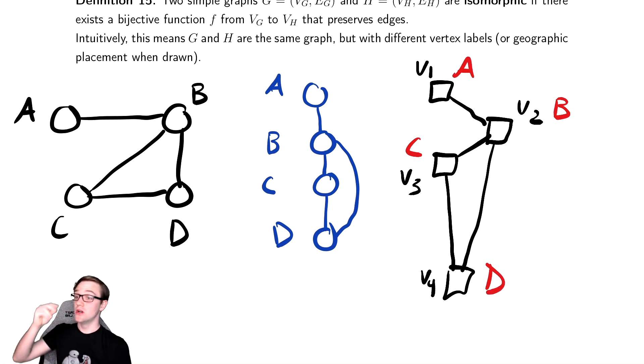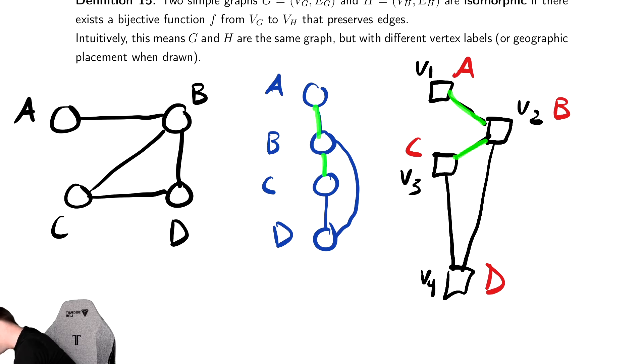And if I were to check all of the edges, there's an edge between A and B, there's an edge between B and C, there's an edge between C and D, and there's an edge between B and D, those are actually identical graphs. They're just drawn and labeled differently.